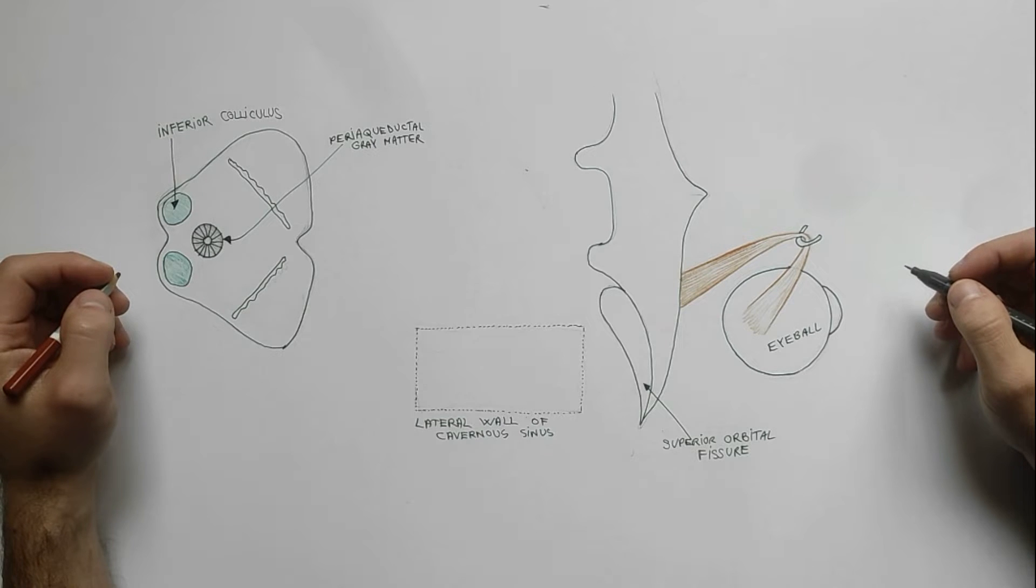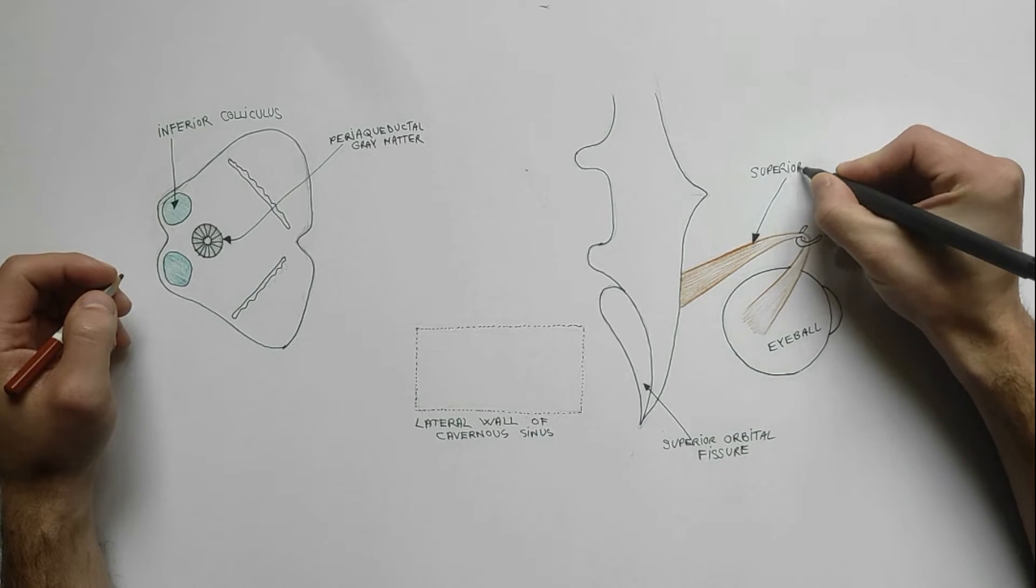The trochlear nerve is the smallest of the cranial nerves and innervates a single muscle in the orbit, the superior oblique muscle.